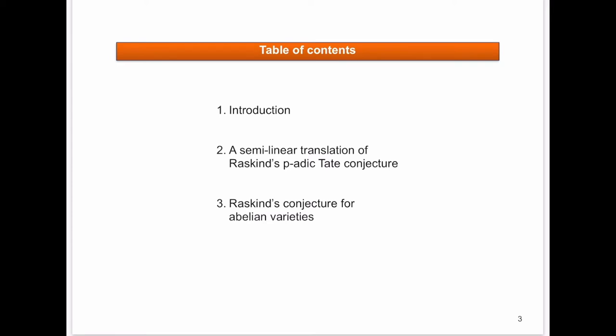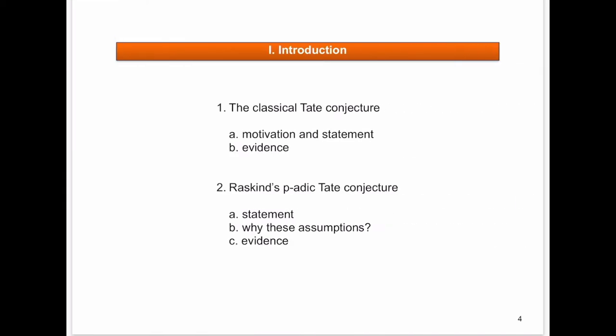Abeloid varieties are certain abelian varieties over the p-adics, and we will give a counterexample to Raskind's conjecture. It is nevertheless very interesting to see where it fails. I will start with the classical Tate conjecture — its statement, a little motivation and evidence — and then turn to the p-adic Tate conjecture of Raskind, discussing why this is the form I'm using.